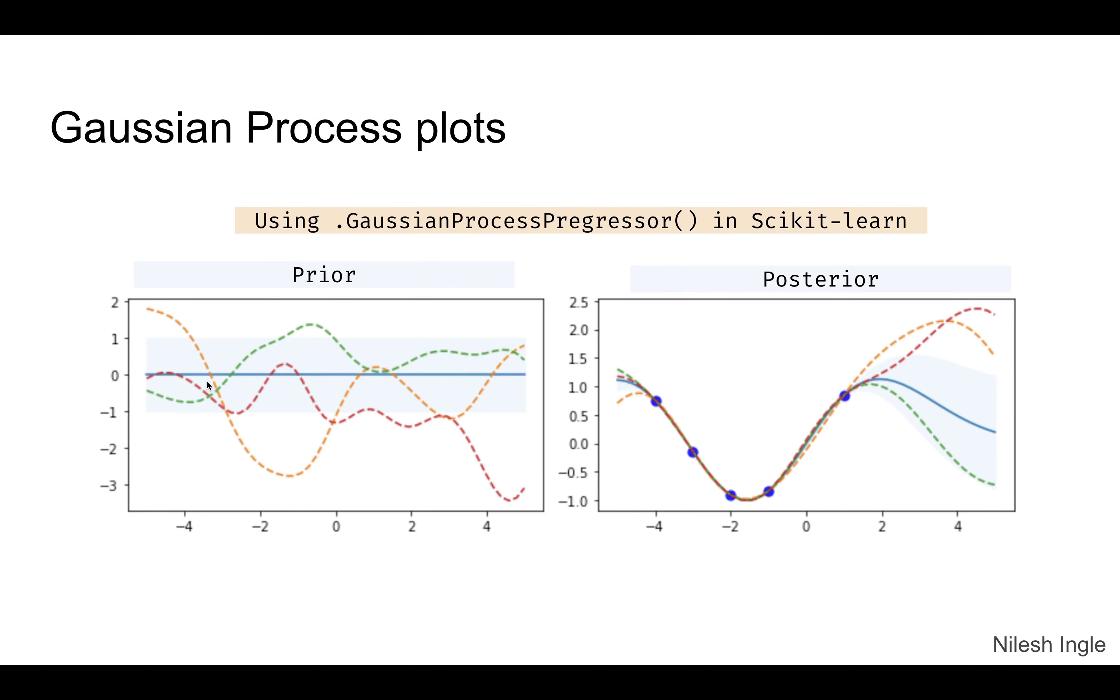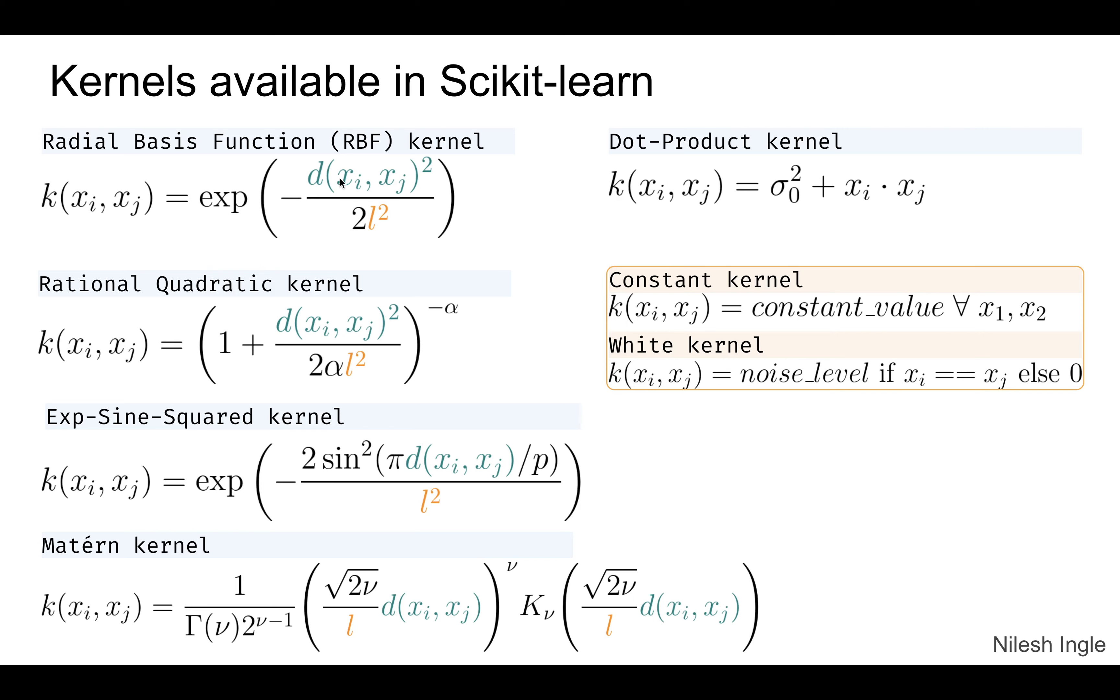Now these functions—the properties of these functions such as how wavy they can be or how close they can be—those can be changed using different kernels. These are the list of kernels that scikit-learn has.